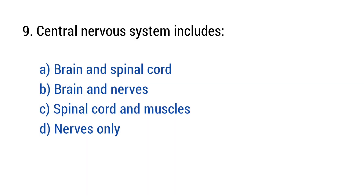Question number nine. Central neural system includes. The right answer is option A: Brain and spinal cord.